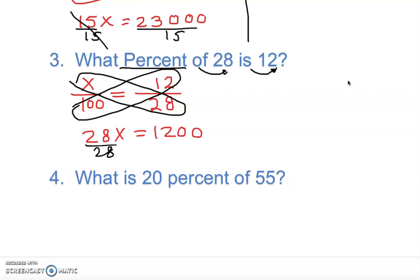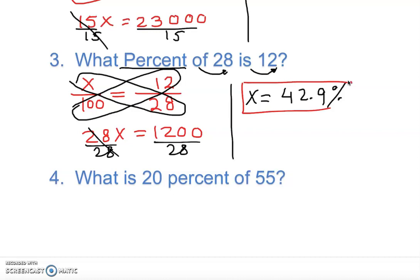Dividing both sides by 28: X equals 1,200 divided by 28. Doing the long division gives 42.9. Since we are looking for a percentage, we include the percent symbol. Generally, when a question asks for a percentage, we round to the nearest tenth — one decimal place — unless the question specifies otherwise. So the answer is 42.9%.